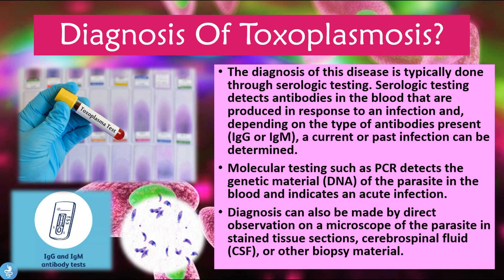The diagnosis of toxoplasmosis is typically done through serological testing, which detects antibodies in the blood produced in response to the infection. Depending on the type of antibodies present — either IgG or IgM — a current or past infection can be determined. High titers of IgM indicate a recent or current infection, while high titers of IgG indicate a past or more chronic infection. Molecular testing such as PCR can also be performed, which detects the DNA of the parasite in the blood and indicates an acute infection.